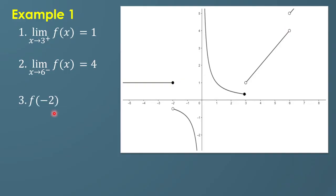Let's say we would like to find f of negative 2. The idea is if we substitute negative 2 into our function, what is the value of y? In reference to our graph, at x = negative 2 there is a shaded point and an unshaded point. Between the two, f of negative 2 should be 1.